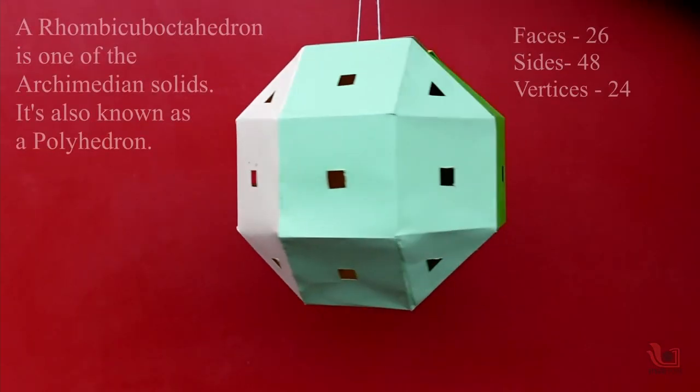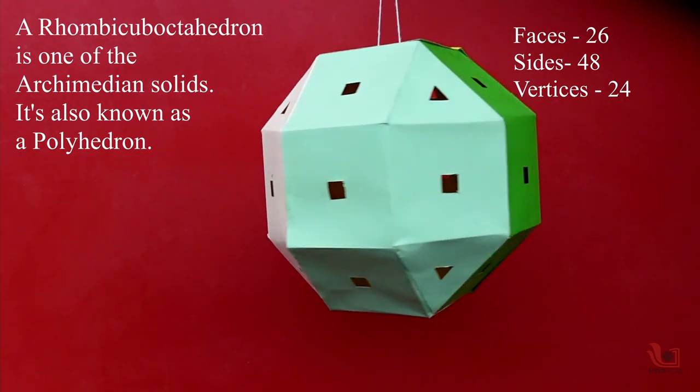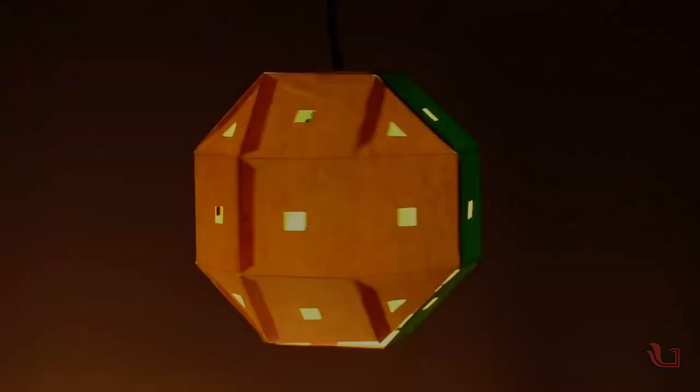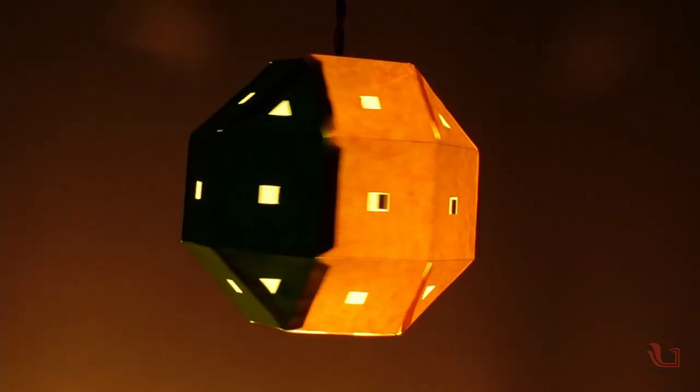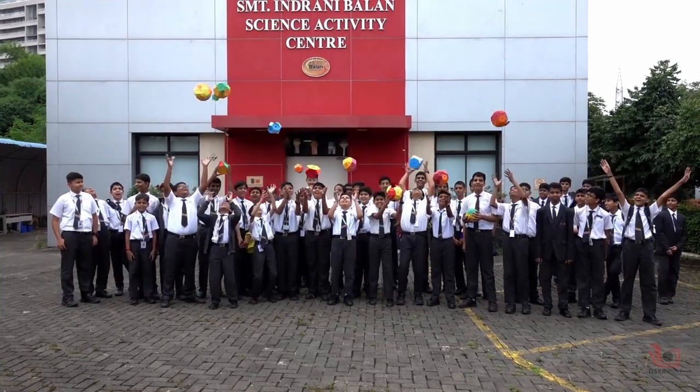This Rhombicuboctahedron has 26 faces, 48 sides and 24 vertices. It is a polyhedron. Install the bulb in the solid and make it a sky lantern. Thank you. Happy Rhombi!